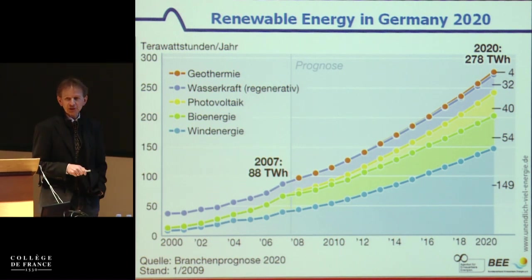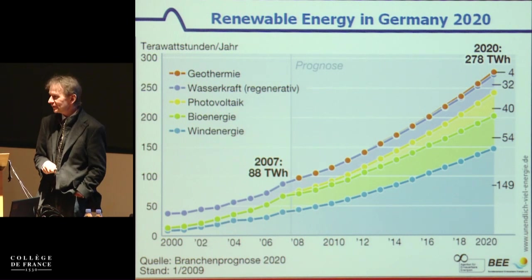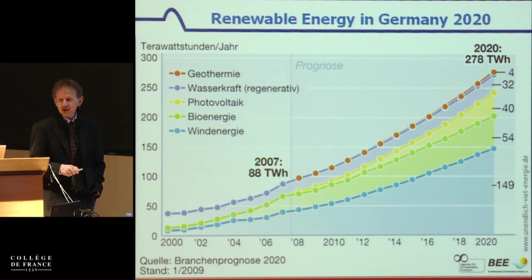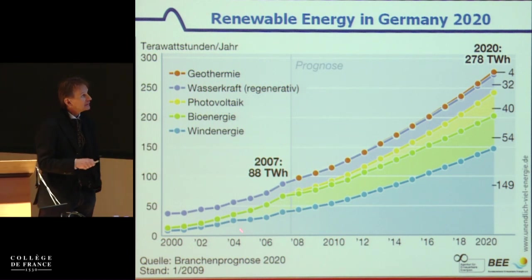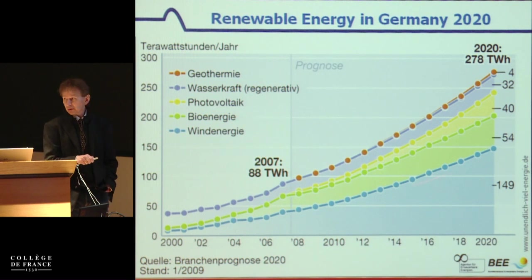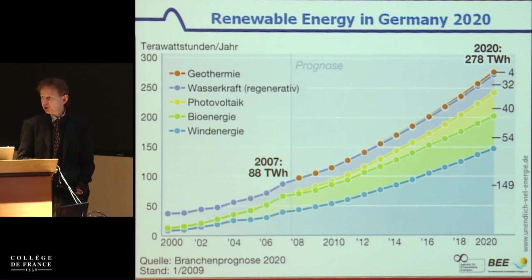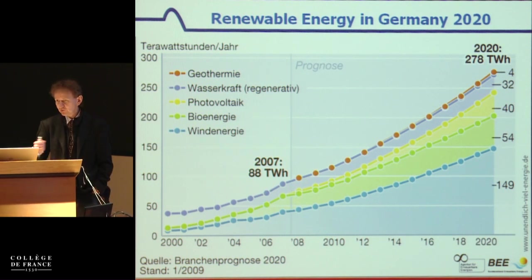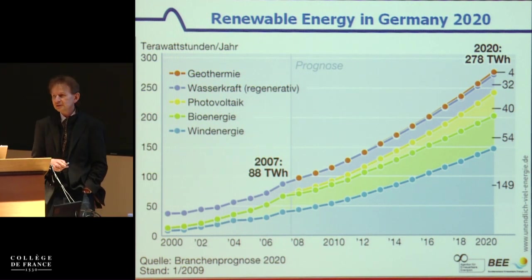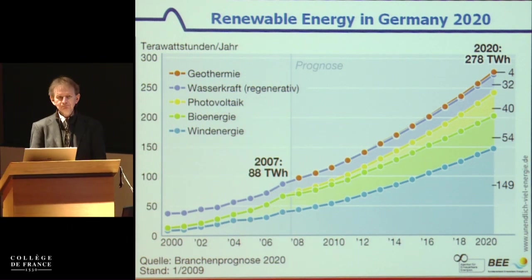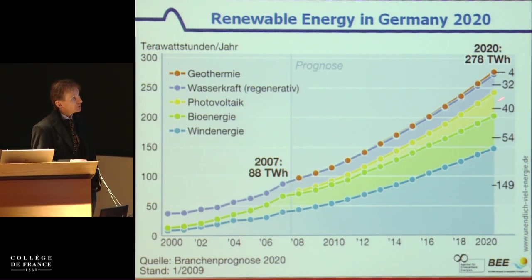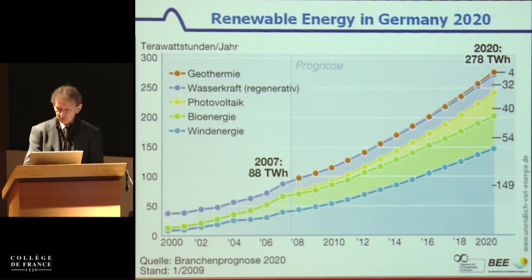Unfortunately the wind blows especially in northern Germany, where there is very little industry, so you have to find ways to bring the electricity to the south and southwest. There is also biogas, hydropower — which doesn't change much since we have used it for a long time — and a little PV photovoltaics, which in Germany is more expensive, or the most expensive renewable energy, much more expensive than wind in the northern part.